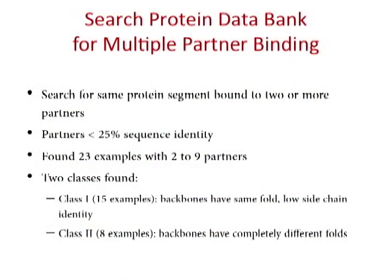Our rationale here is to search for the same protein segment bound to two or more partners in the Protein Data Bank, and collect as many hub proteins as we can, and see how protein disorder facilitates hub proteins to associate with multiple partners. The sequence identities between partners shall be less than 25%. Based on this criteria, we found 23 hubs with two to nine binding partners. They can be grouped into two classes.